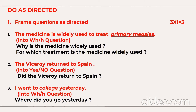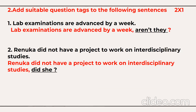Now you have basic grammar with three question-framing questions — WH questions and yes/no questions. For example, 'The medicine is widely used to treat primary missiles.' Frame a WH question: 'Why is the medicine widely used?' or 'For which treatment is the medicine widely used?' For yes/no questions: 'The viceroy returned to Spain' becomes 'Did the viceroy return to Spain?' — note that when using 'did,' you don't use the past form of the main verb. These are the question-framing topic questions.